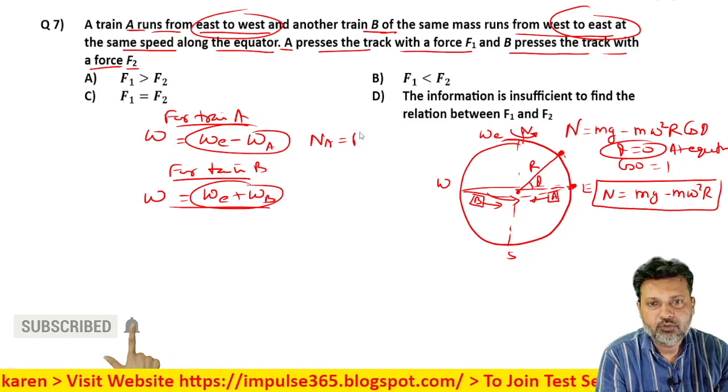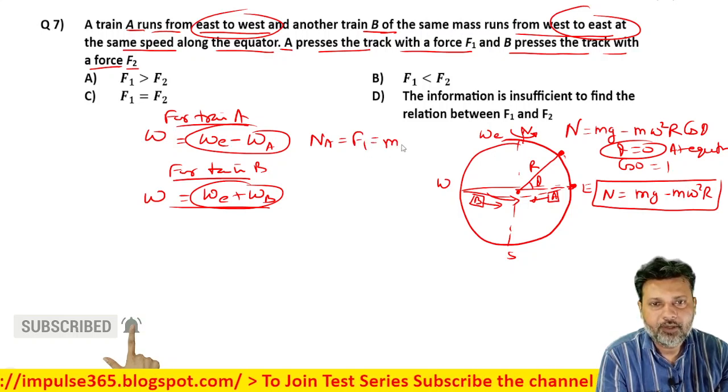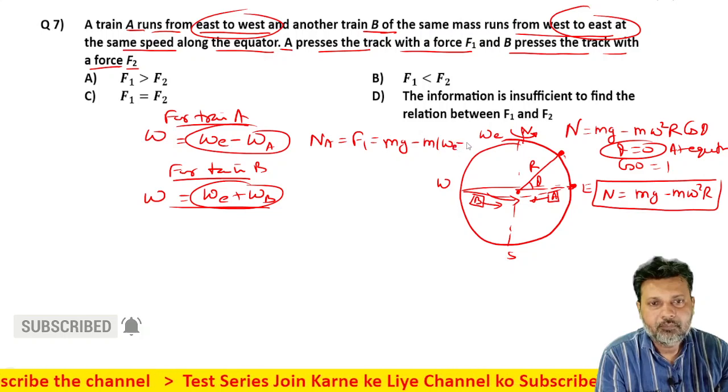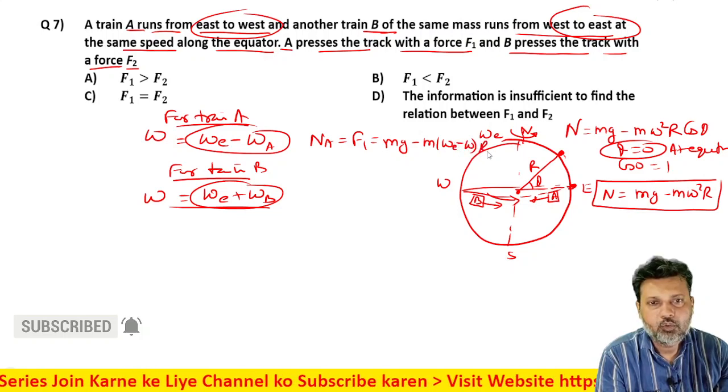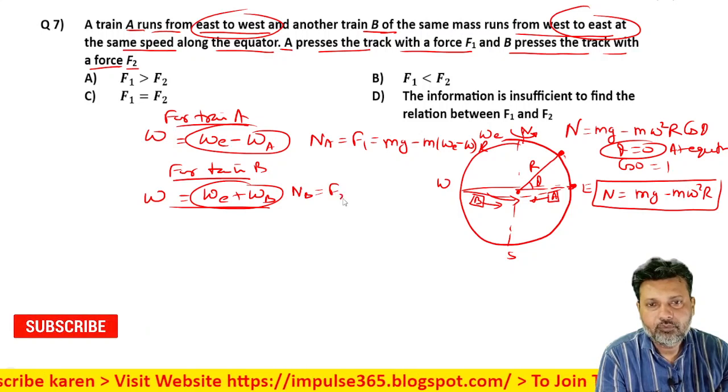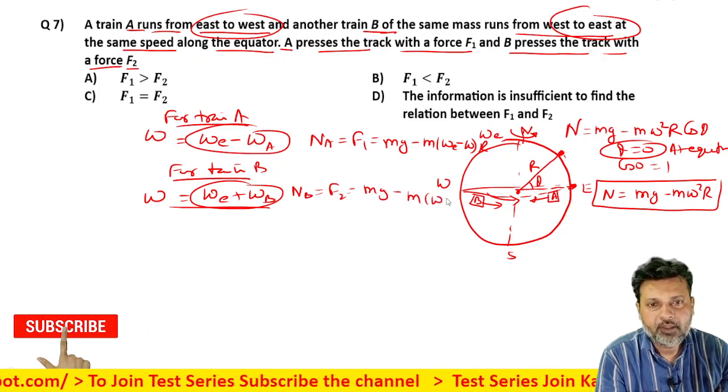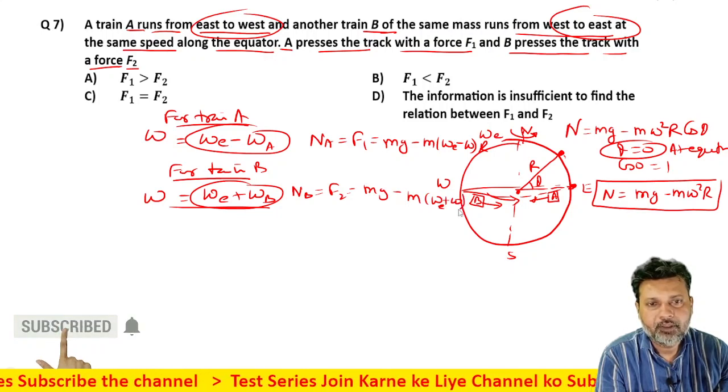Now if we substitute these values, the normal reaction in A's case, which we're calling F1, has value: mg - m(ωe - ω)²r. And N_b which is F2: mg - m(ωe + ω)²r.